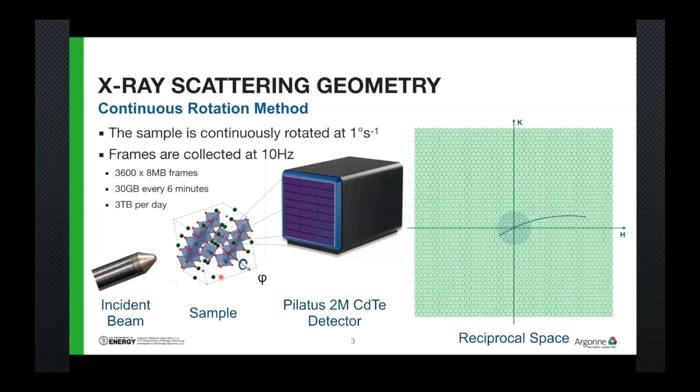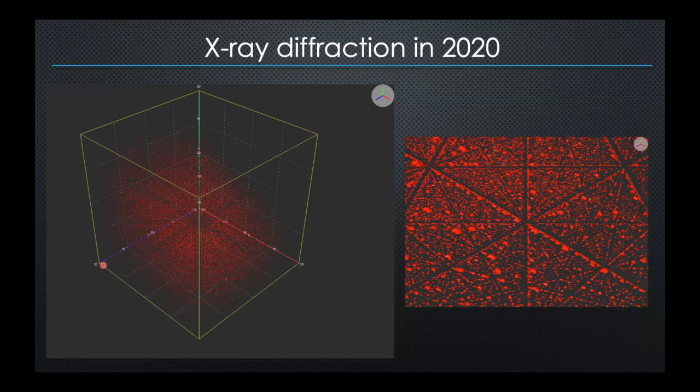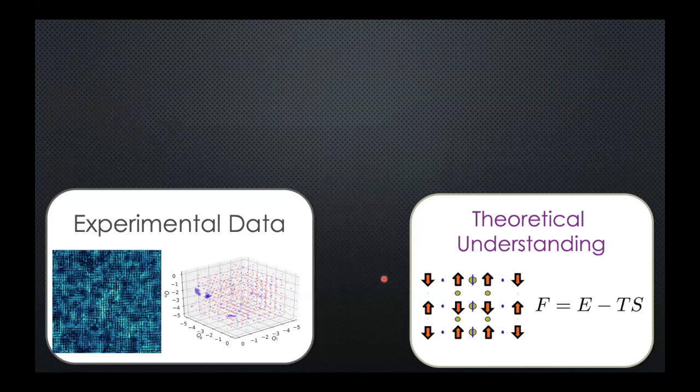This is what the data looks like — just looking at about 20 Brillouin zones by 20 by 20, so that's 8,000 Brillouin zones, with a distribution of intensities. Because it's hard to visualize in 3D, if we project and look at how the intensities are distributed, you see this kind of data.